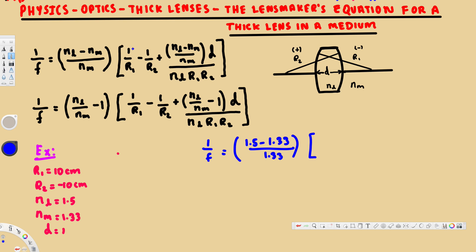On the other side of the equation, we have 1 over r1. r1 is the radius of curvature on the front side, which is always positive, and r2 is the radius of curvature on the back side of the thick lens, which is negative. d is the distance between the curvatures, which is 1 centimeter.